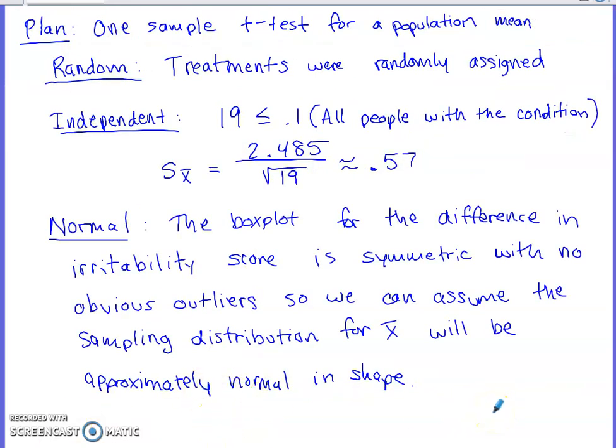Now, the planning portion of this is where I've always urged my students to name the procedure that you're using. This is a one sample, and this is a little weird because it seems like we have two samples, right? We have the placebo, and then we have the actual treatment, the active ingredient treatment, the omega-3. But we're intentionally taking a difference prior to us doing any of our work.